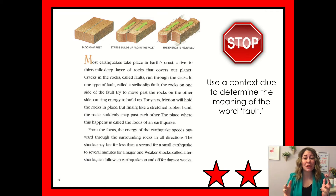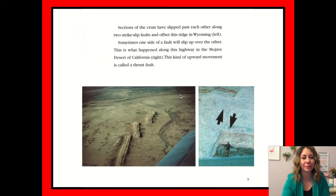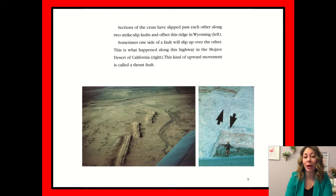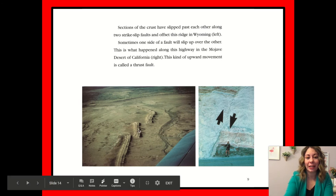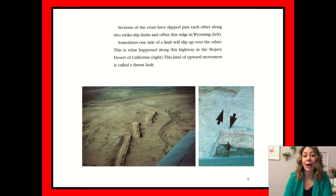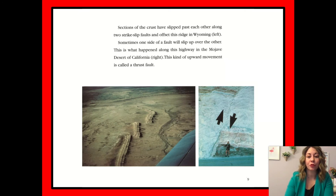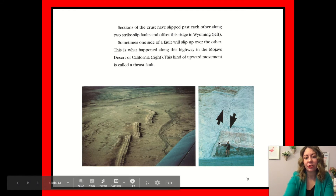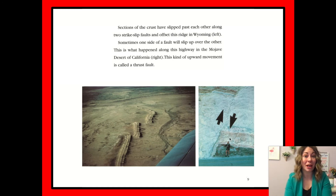Wasn't that cool? Especially seeing the picture on this page animated — how the fault and an earthquake happen with energy building up, and then the rocks slide apart. Sections of the crust have slipped past each other along two strike-slip faults and offset this ridge in Wyoming, which is on the left — you can see how those are no longer lining up, and they used to. Sometimes one side of a fault will slip up over the other, as happened along this highway in the Mojave Desert of California. This kind of upward movement is called a thrust fault.